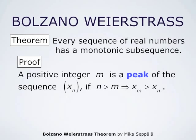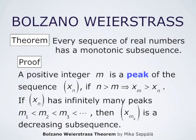Now if the sequence has infinitely many peaks m1 < m2 < m3, then by the definition of the peaks, the subsequence formed by x_{m_k} is a decreasing subsequence. And in this case, the proof is already complete.